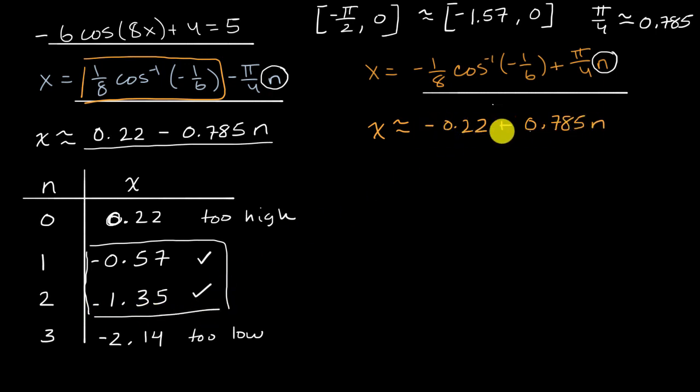Now let's use these x values right over here. And I'll set up another table. So let's see, we have our n and then we have our x values. So let's start with n equals zero because that's easy to compute. And then this term would go away and we'd have negative 0.22. And that's actually in this interval here. It's below zero. It's larger than negative 1.57. So that one checks out.